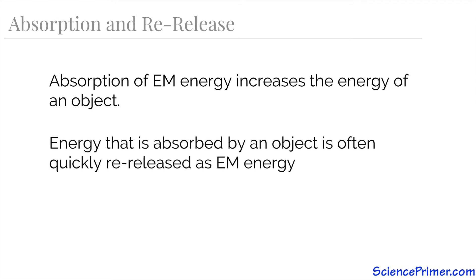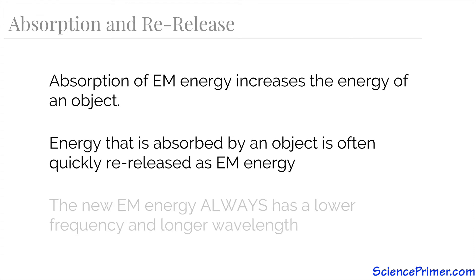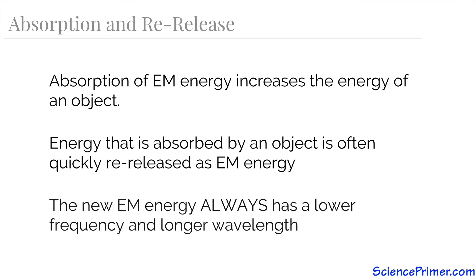While the absorption changes the energy of the material that absorbed the electromagnetic energy, the energy is often quickly re-radiated as black body radiation, meaning it becomes electromagnetic energy again and moves back out into space. When this happens, the new electromagnetic energy always has a lower frequency and longer wavelength than the original energy absorbed by the object.